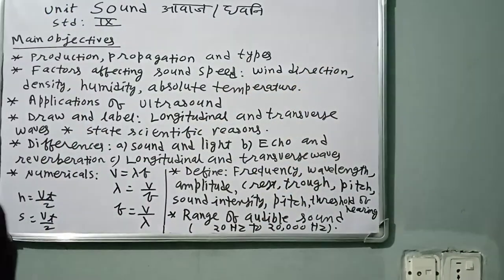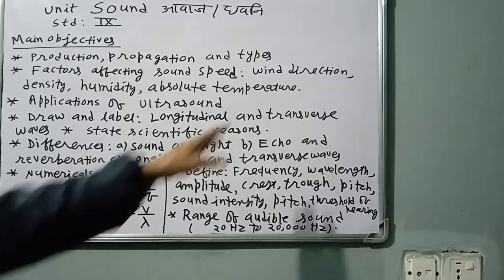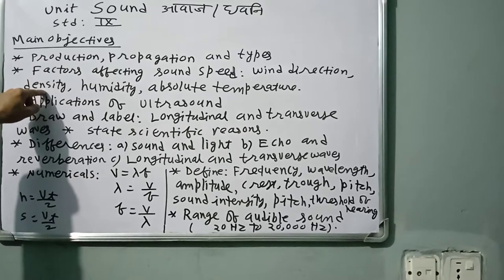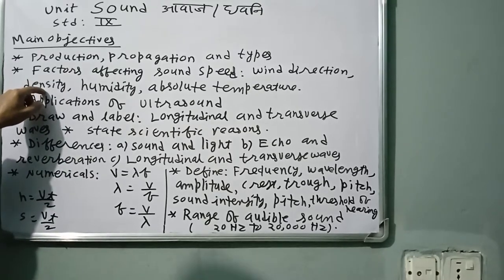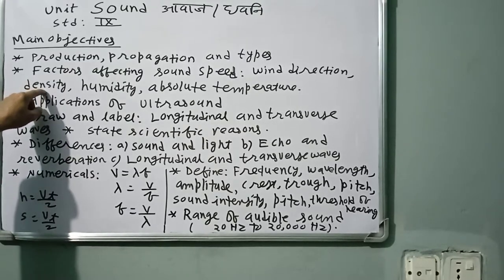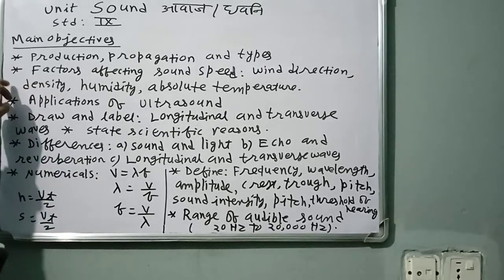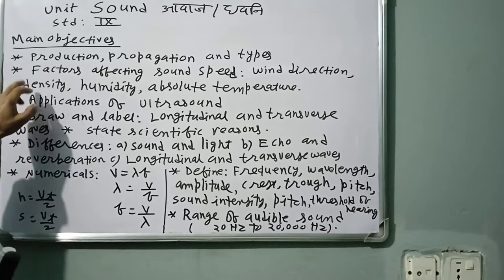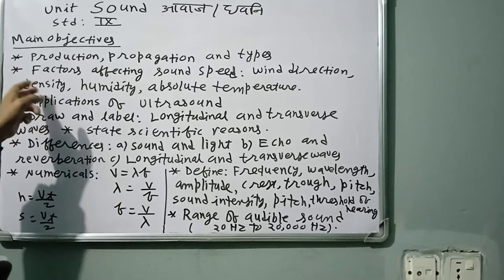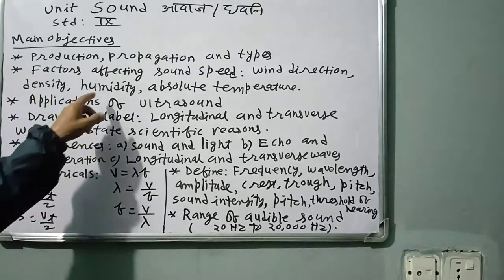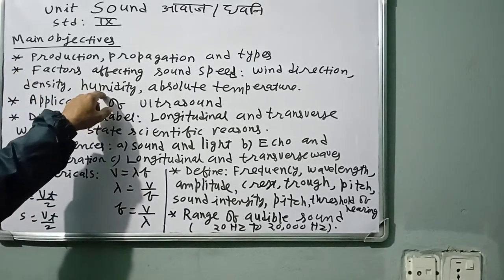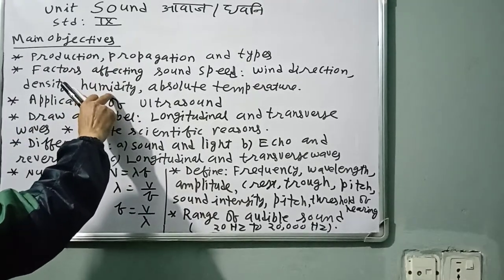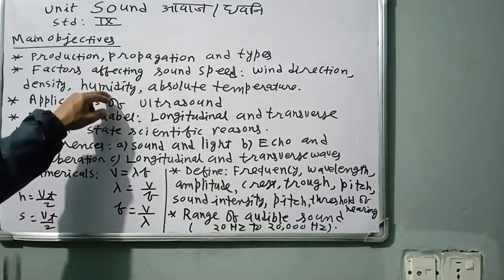Sound speed is inversely related to density for gases — high density means low speed, low density means high speed. For solids and liquids, sound speed is directly proportional to density. Humidity, meaning the amount of water vapor present in air, also affects sound speed — it is directly proportional to humidity.